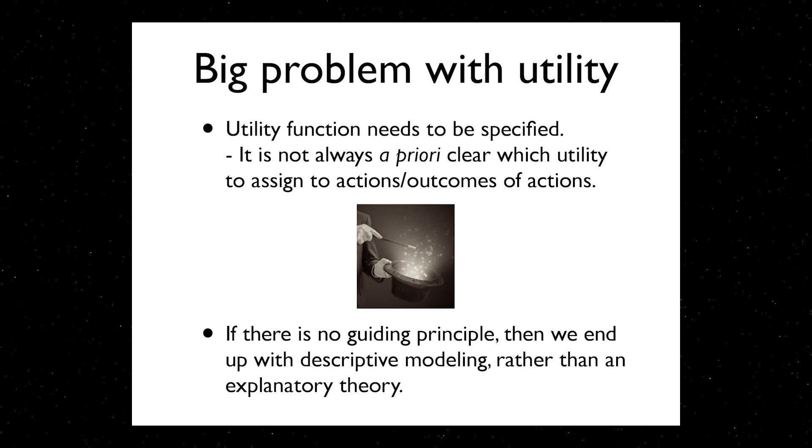Two people might think different things. So there's a large variety of measures that can — as physicists like to say — be pulled out of our sleeves. If there isn't a guiding principle as to how to choose these measures, then the resulting theories will never really be explanatory theories; they'll just be descriptive theories. In particular, to see more complicated behaviors in your agents, you're going to have to put in more complicated utility functions or reward functions, and that is not satisfying for some people like me.